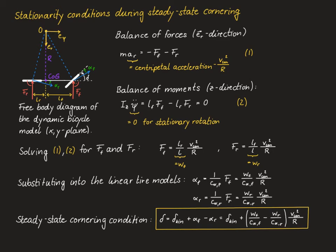A steering angle that increases with longitudinal speed corresponds to understeering, while one that decreases corresponds to oversteering — exactly as defined in the previous video. This is precisely the reason for defining the bracketed term as the understeer gradient of the vehicle, denoted by the capital letter K.